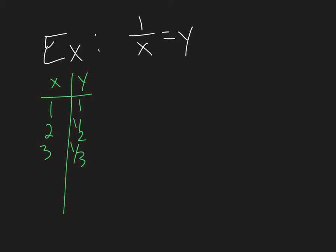If I plug in some negatives: I get negative one, I get negative one. If I plug in negative two, I get negative one-half. If I do negative three, I get negative one-third.